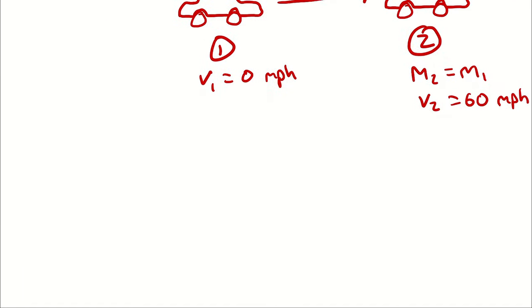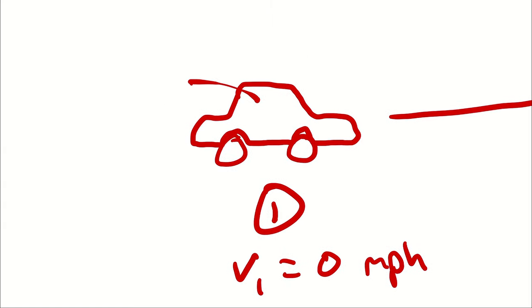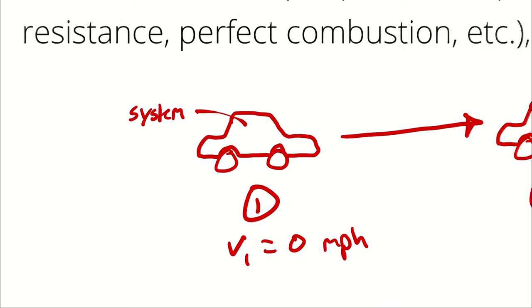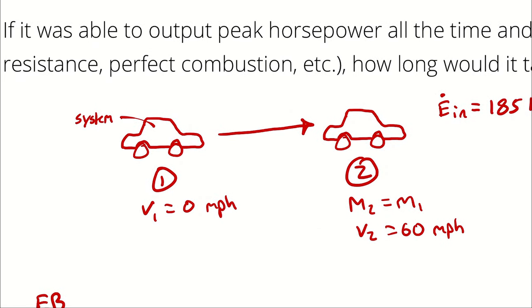Now I'm going to write out my energy balance, and that energy balance has to be performed on something. I am defining my system as the car. And as a result of having a constant mass, that system is going to be a closed system. The other thing we have to consider here is whether or not to treat the analysis as a steady process or a transient process.